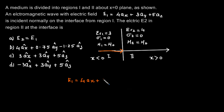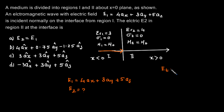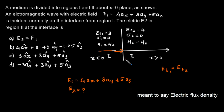We are given the electric field E1 in medium 1 as 4ax plus 3ay plus 5az. Now we need to find the electric field in medium 2, so we must apply the boundary conditions for electric field. The tangential component of electric field is continuous, that is E1 tangential equals E2 tangential.